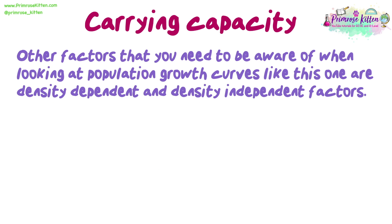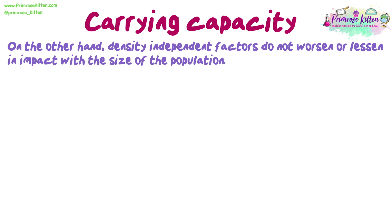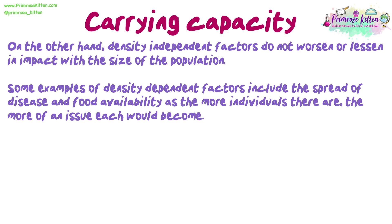Other factors to be aware of when looking at population growth curves are density-dependent and density-independent factors. Density-dependent factors describe selection pressures that have a heightened effect as the population increases and a lesser effect when it decreases — they are dependent on the population density. Some examples of density-dependent factors include the spread of disease and food availability, as the more individuals there are, the more of an issue each would become.